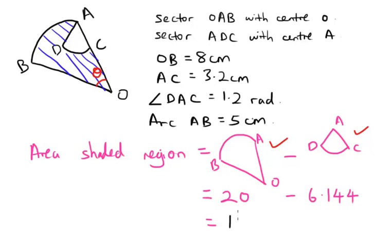Now the answer would be 20 minus 6.144, which equals 13.856 cm². That is the area for your shaded region.